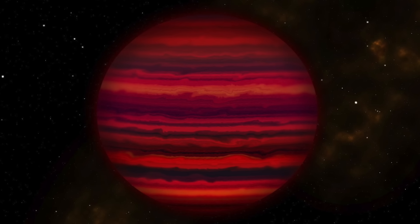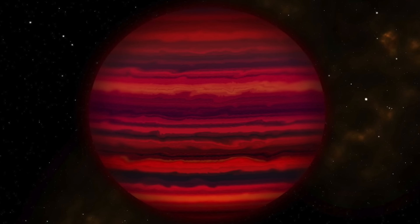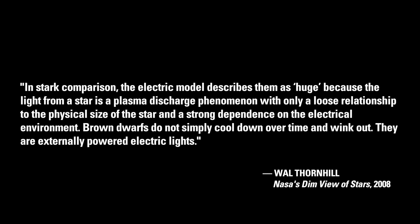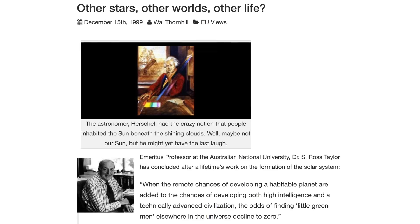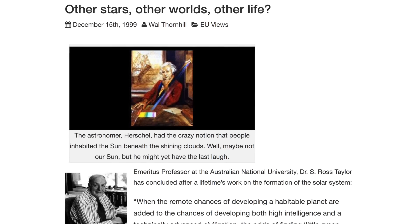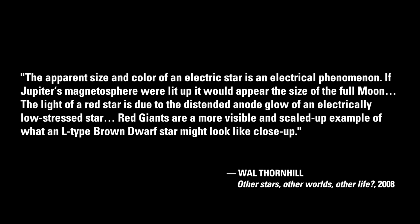The very name 'brown dwarf' assumes that these stars are compact balls of gas floating freely in space. In contrast, the electric model describes them as huge, because the light from a star is a plasma discharge phenomenon with only a loose relationship to the physical size of the star and a strong dependence on the electrical environment. Brown dwarfs do not simply cool down over time and wink out — they are externally powered electric lights. In December 1999, Wal also wrote: 'The apparent size and color of an electric star is an electrical phenomenon. If Jupiter's magnetosphere were lit up, it would appear the size of the full moon. The light of a red star is due to the distended anode glow of an electrically low-stressed star. Red giants are a more visible and scaled-up example of what an L-type brown dwarf star might look like close up.'